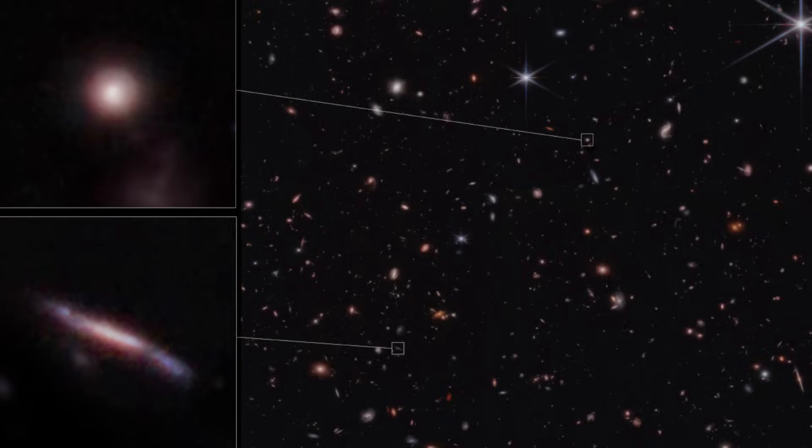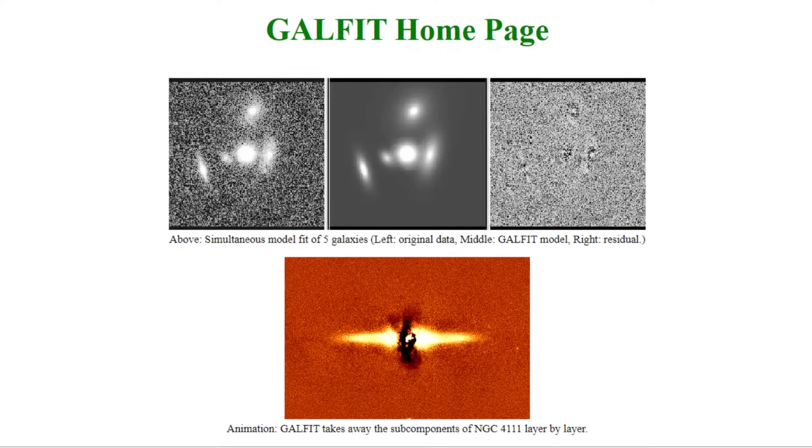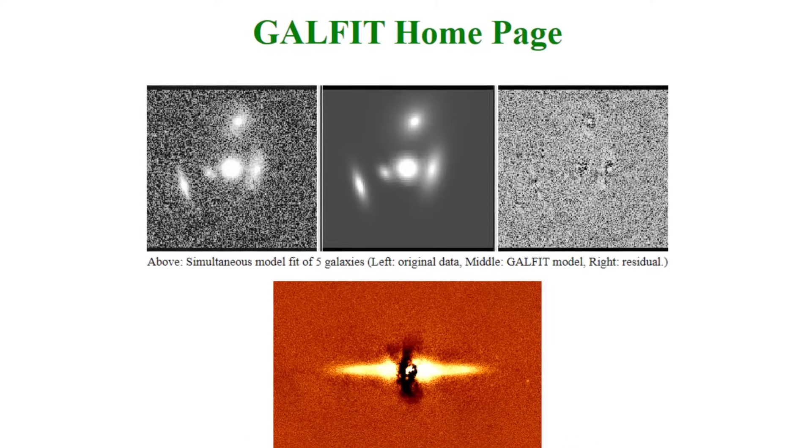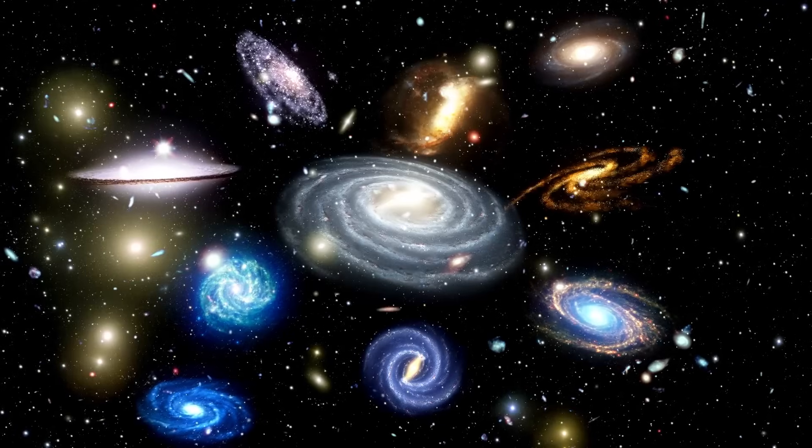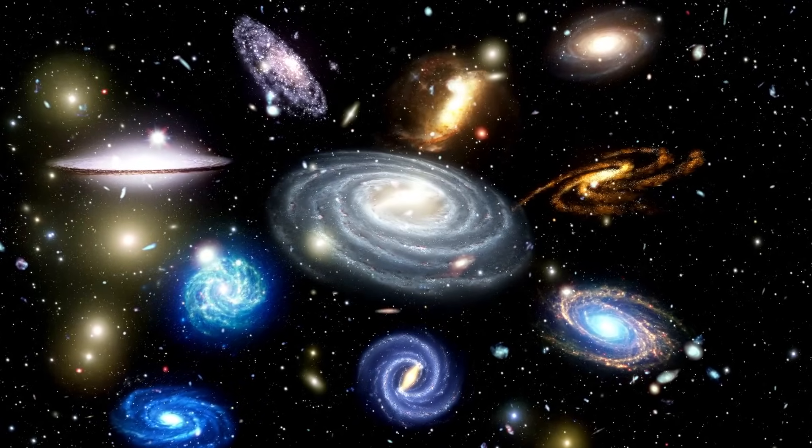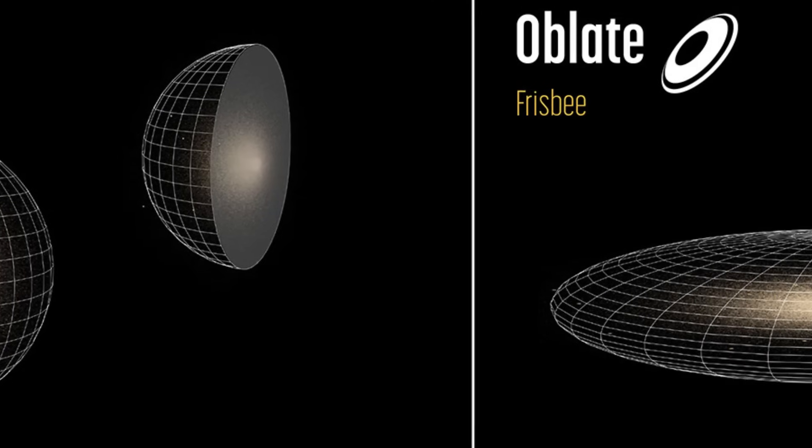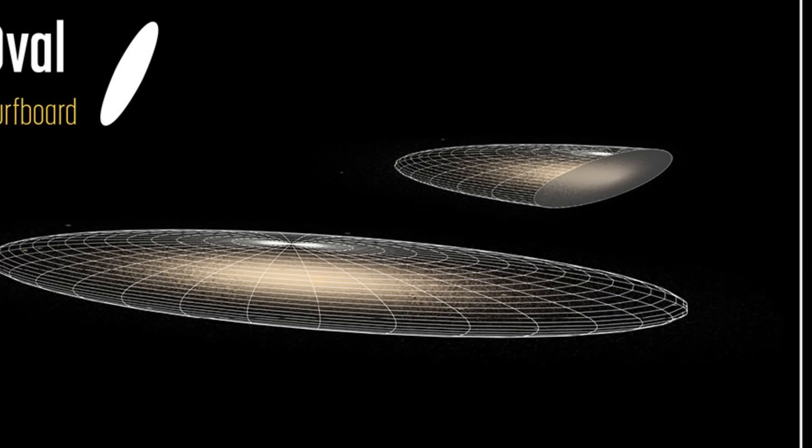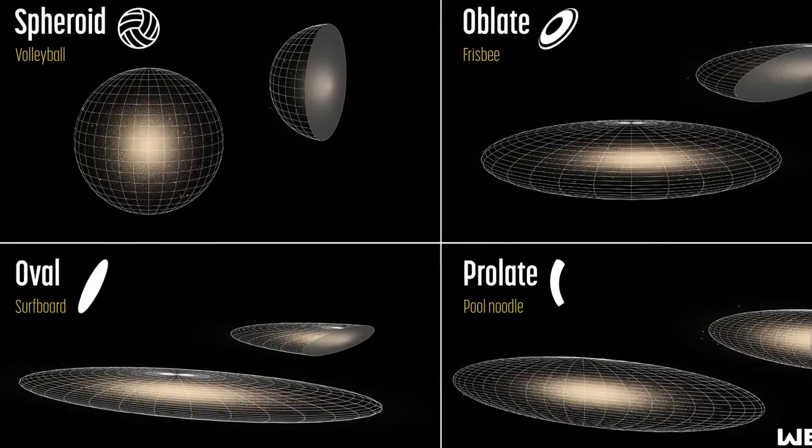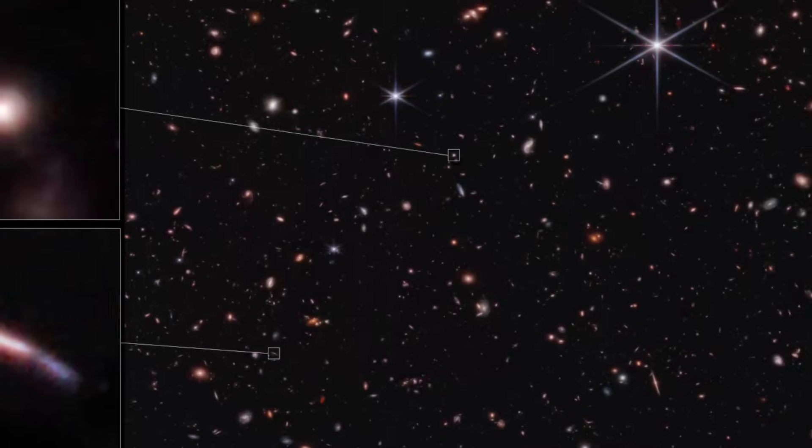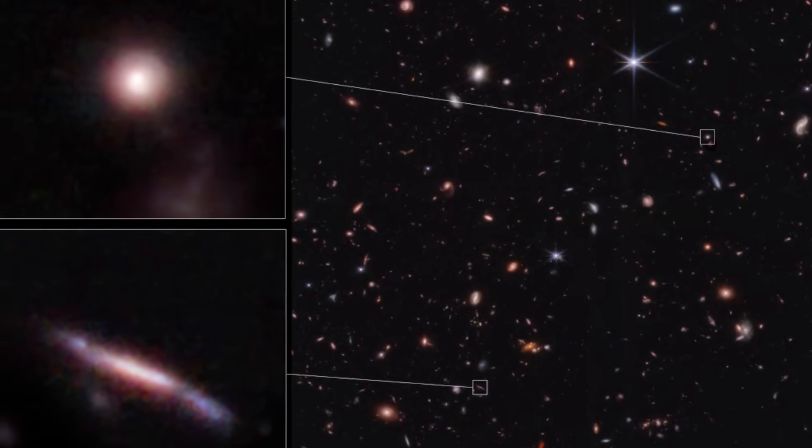To measure the shapes of these galaxies, the study used a technique called GALFIT, which is a software that fits mathematical models to the images of galaxies and estimates their parameters, such as their size, brightness, and orientation. They used two models, one that assumes that galaxies are round or spherical, and one that assumes that galaxies are flat or disk-like. By comparing the goodness of fit of these models, the study was able to determine which one was more likely to represent the true shape of the galaxy.